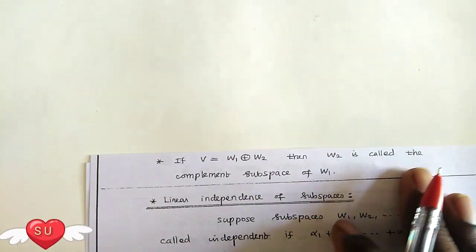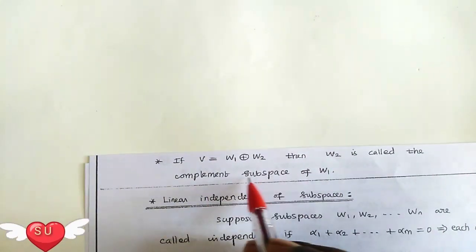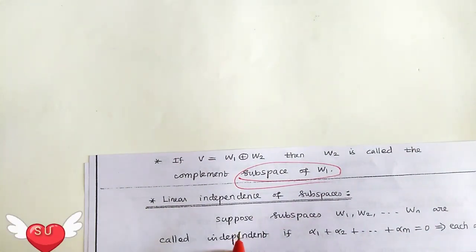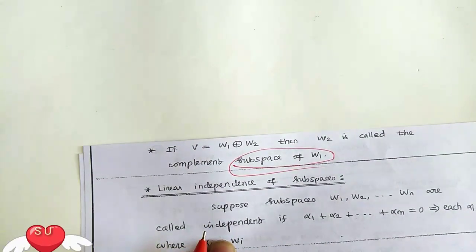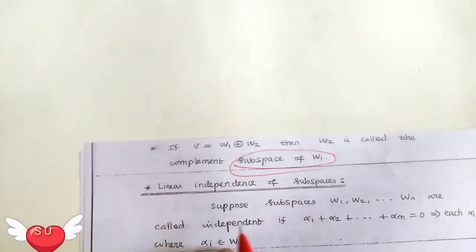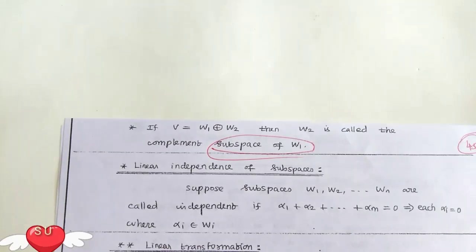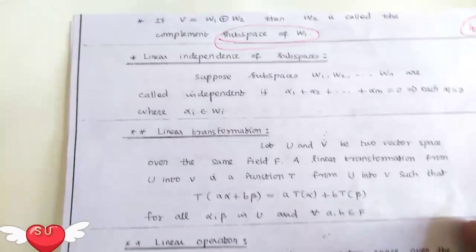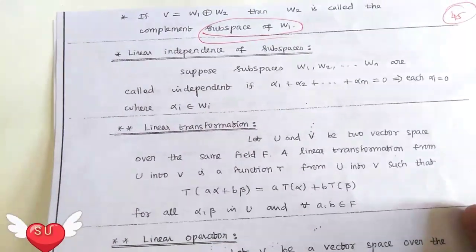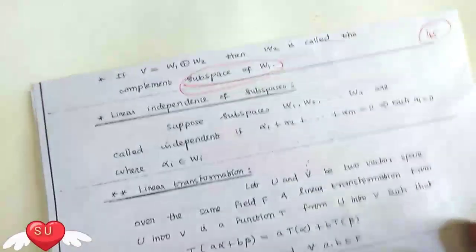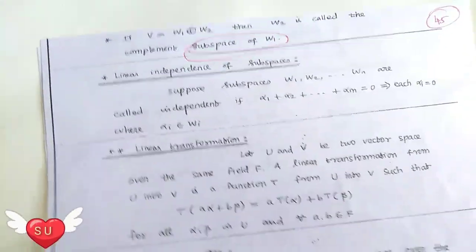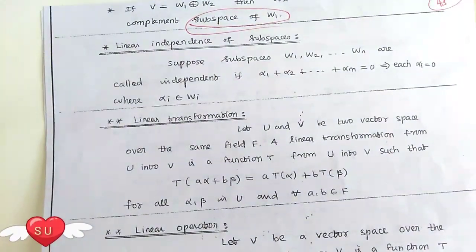If vector of equals two subsets under the end, then W2 is called the complemented subspace of W1. Next we have linear independent subspace, transform operation, linear function, dual linear functions. Next video we will continue. Please subscribe to the channel. Thank you.